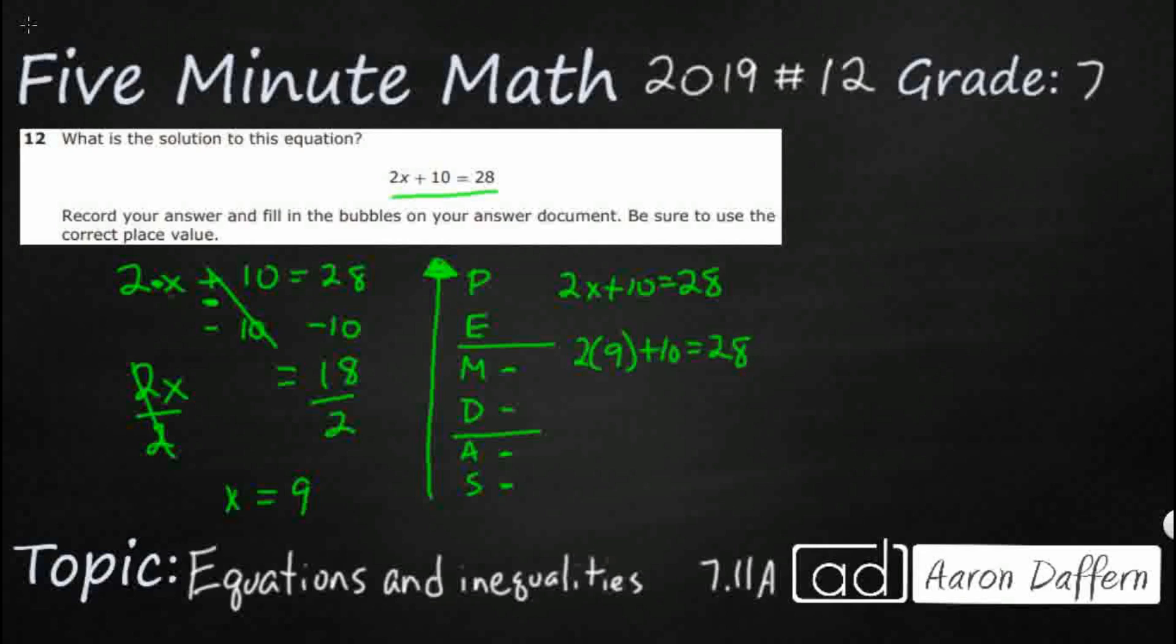We're going to substitute in this 9 where the x is. Now we need to do the order of operations. But remember, we need to do it from the top down. When we're actually simplifying, we do this from the top down. We don't have any parentheses or exponents. We do have a multiplication right here. 2 times 9. Let's go ahead and show it like that so we can see exactly what we're doing.